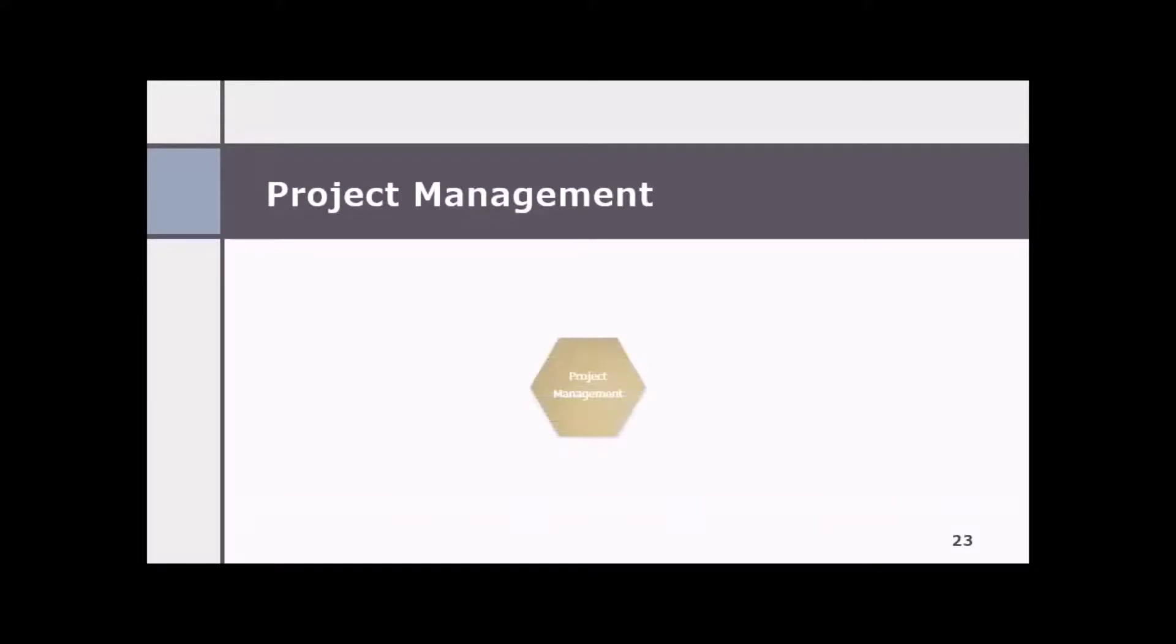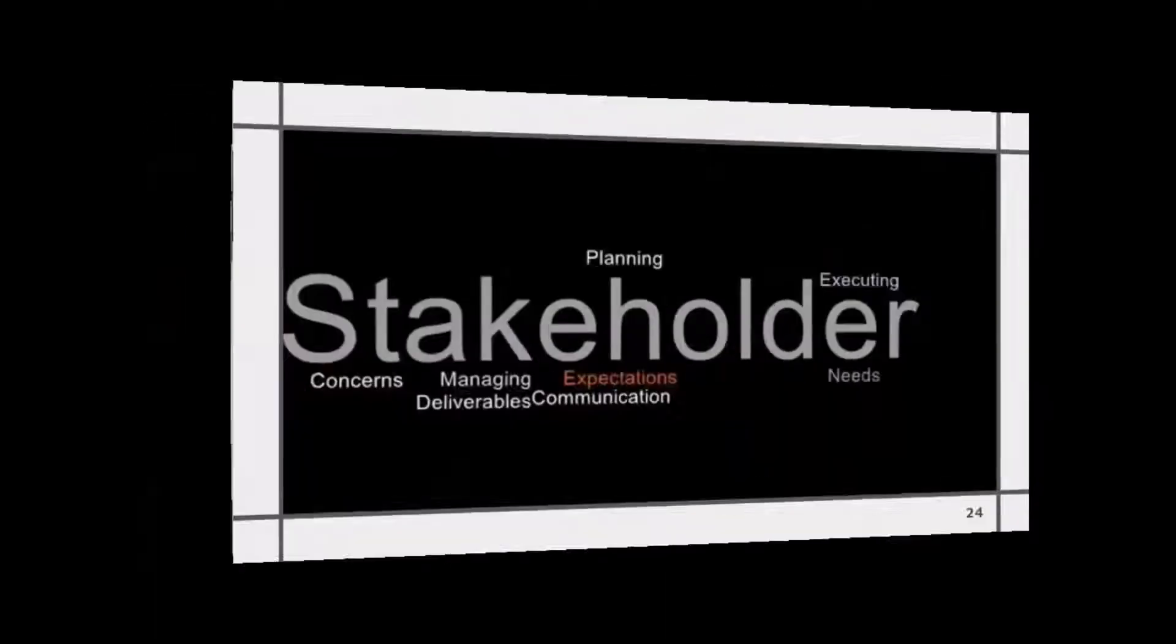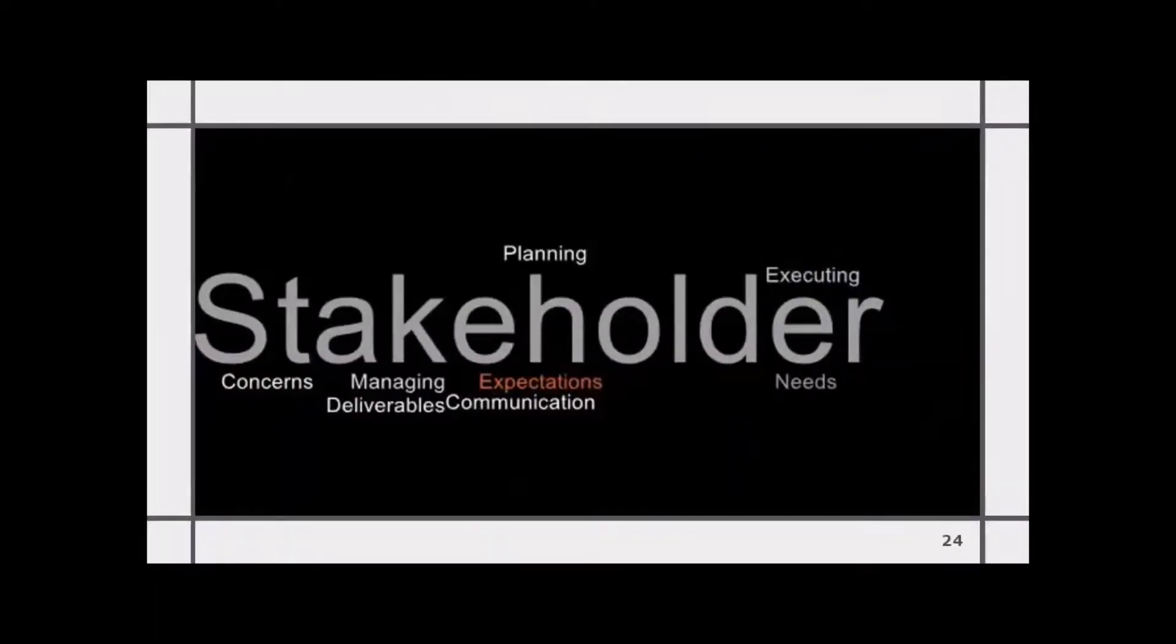Project management is about balancing the competing project constraints, which are scope, quality, schedule, budget, resource, and risk, as applicable in any AI project. And overall, it is about stakeholder management, which involves addressing various needs, concerns, and expectations of the stakeholders in planning and executing specific AI project.